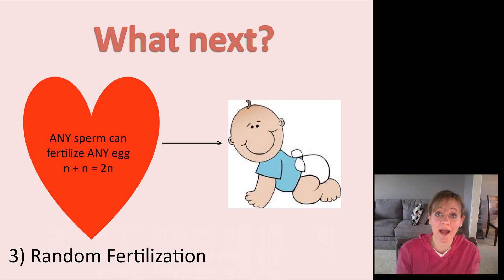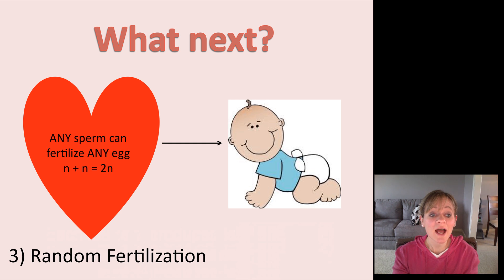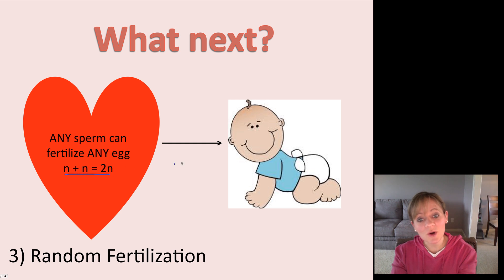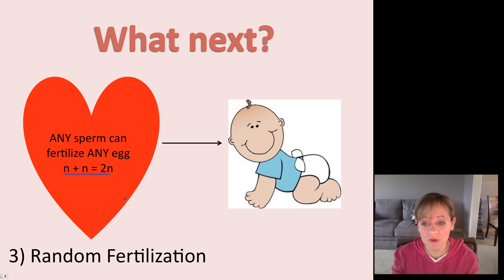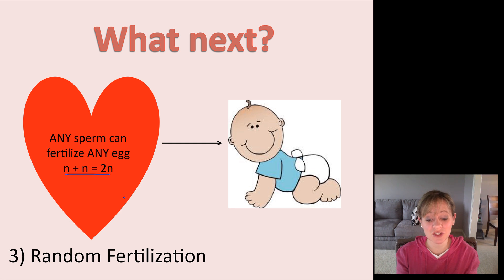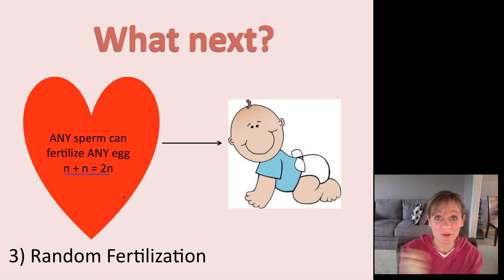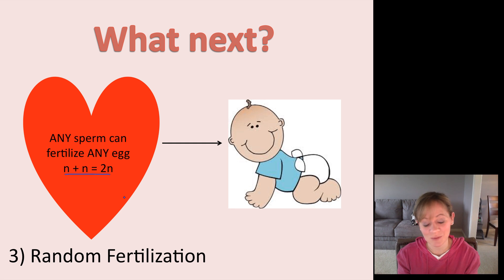What happens next? We've got our egg and our sperm. Remember back to that life cycle diagram — the egg and the sperm are going to fertilize one another, so n plus n equals 2n. After fertilization, it grows and turns into a baby. This is the third source of variation in the human population: any sperm can fertilize any egg, and this is called random fertilization. Even on the off chance that a sperm and an egg were identical to each other, any sperm can fertilize any egg, which makes it infinitesimally rare that you would look exactly like your brother or sister.